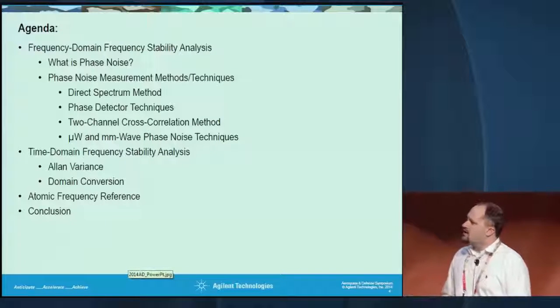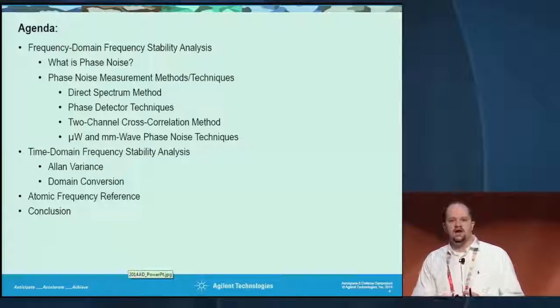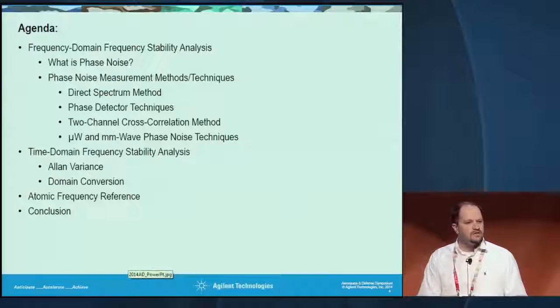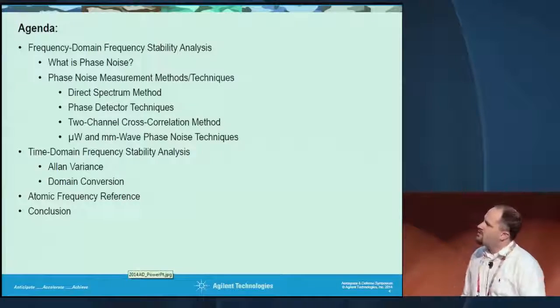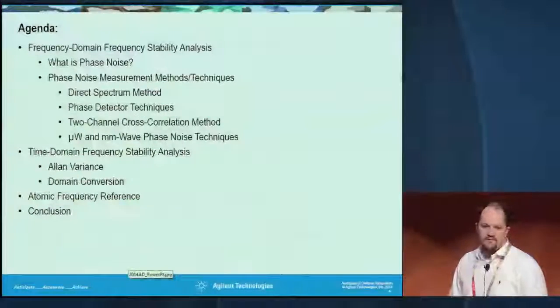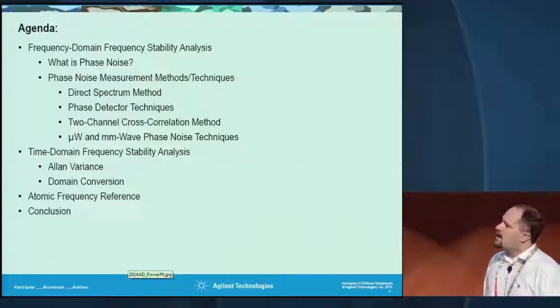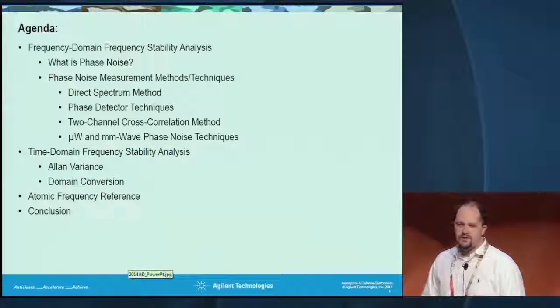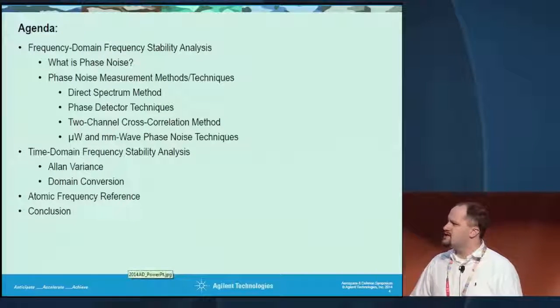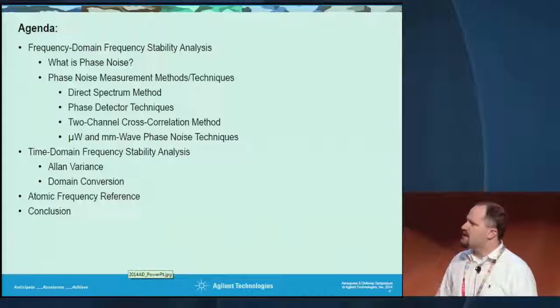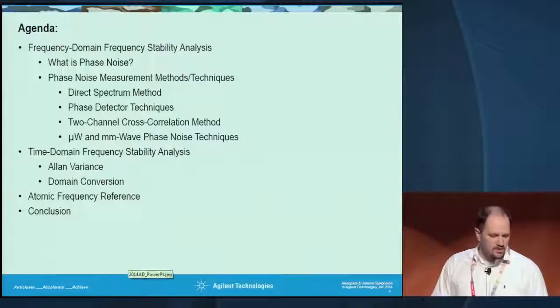Here's the quick agenda. The CD has a longer presentation with speaker notes that go into more detail on the subject — this is really just an introduction. We've already talked a little about what phase noise is. I'm going to talk about three different types of measurement techniques, then add another level on the two-channel cross-correlation measurement, talk about extending phase noise to higher frequencies, and then look at time domain stability analysis with the Allan variance and domain conversion. Finally, we have some new capability with our atomic frequency references for long-term stability.